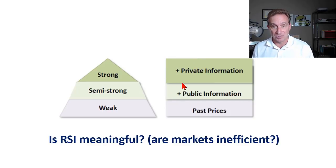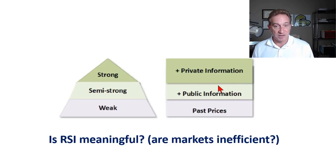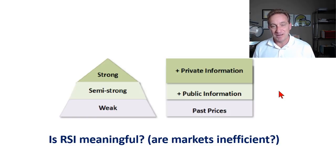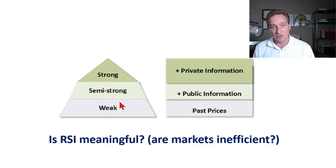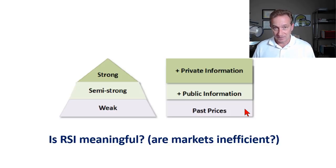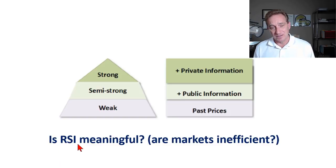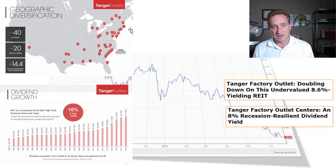The strong form says additionally that private information is also incorporated into the current stock price. This gets pretty fatalistic — if you believe markets are strongly efficient, you could conclude that all active management basically does not add value. The efficient market hypothesis, even in its weak form, is opposed to the notion that technical analysis, including the relative strength indicator, adds any value.